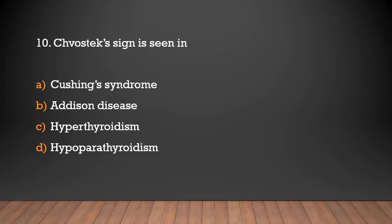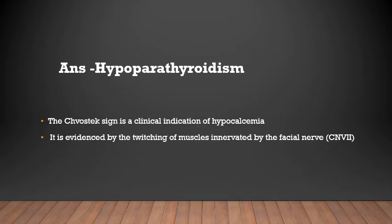Chvostek's sign is seen in: Cushing syndrome, Addison disease, hyperthyroidism, hypoparathyroidism. Correct answer: hypoparathyroidism. Chvostek's sign is a clinical indication of hypocalcemia, evidenced by twitching of the muscles innervated by the facial nerve.